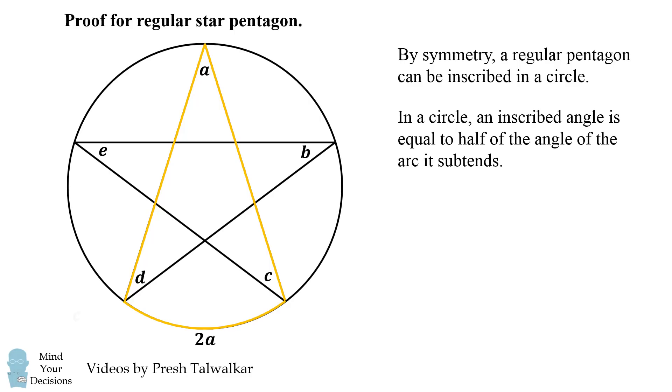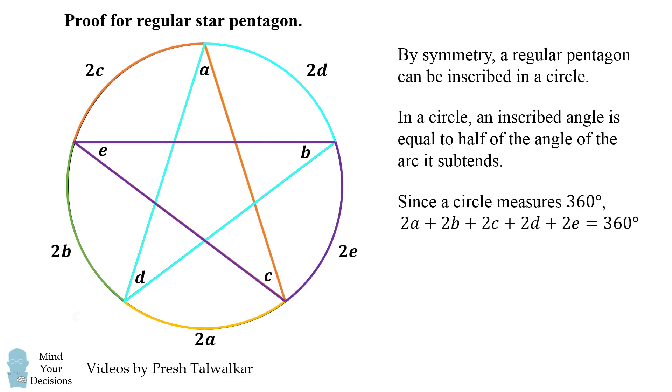Similarly, this arc will have a measure of 2B. Here we have 2C. Here we have 2D. And finally we have 2E. Since a circle measures 360 degrees, the sum of all of these arcs, which will be 2A plus 2B plus 2C plus 2D plus 2E, will equal 360 degrees. Now we just divide by 2 to get the answer. A plus B plus C plus D plus E will equal 180 degrees. So this is a valid proof for a regular star pentagon.